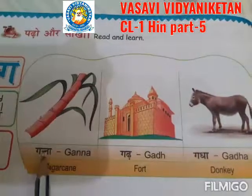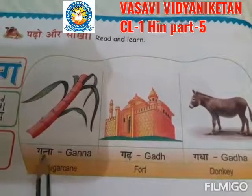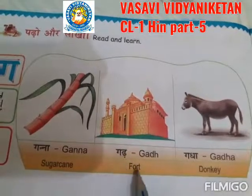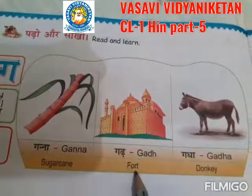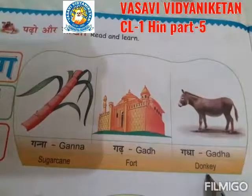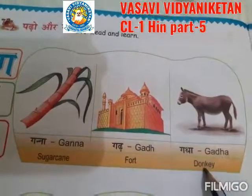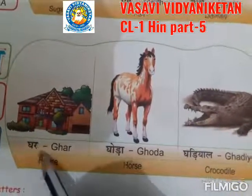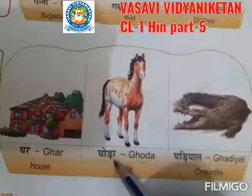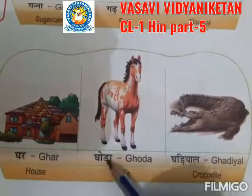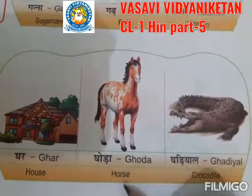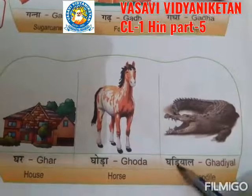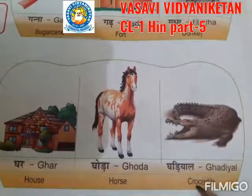Ganna - Sugarcane, Ganna - Sugarcane, Ghad - Fort, Ghad - Fort, Gada - Donkey, Ghad - House, Ghoda - Horse, Ghoda - Horse, Gadiyaal - Crocodile, Ghadiyal - Crocodile.